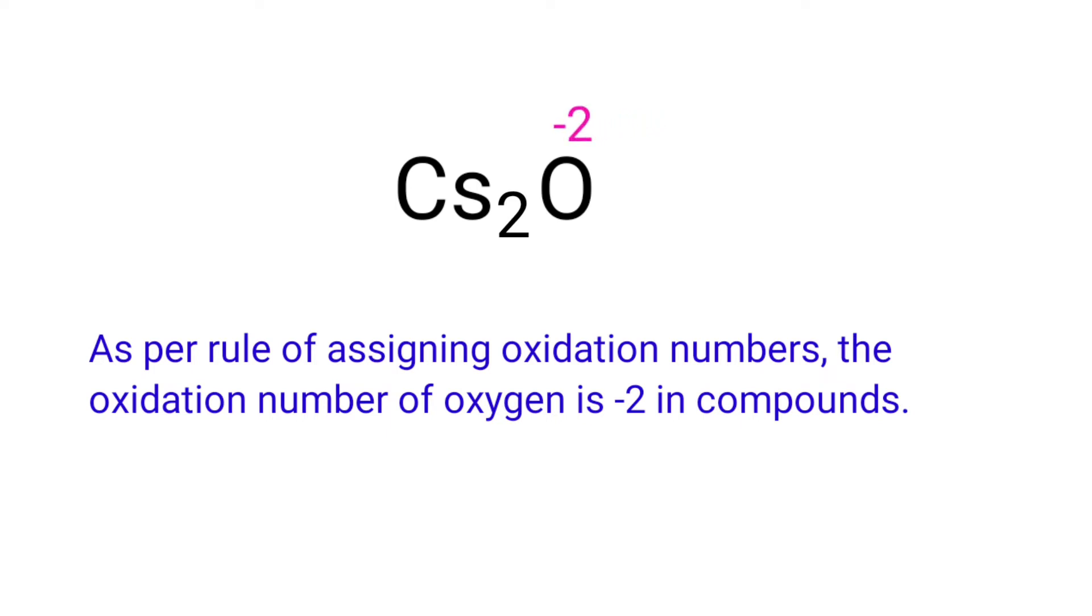We can write the oxidation number of the element above its symbol and the total number of the oxidation numbers of the atoms below its symbol.